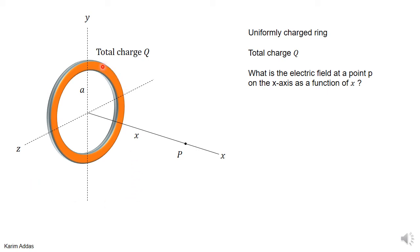You're given a ring of charge that exists in the y-z plane, so the x-axis is perpendicular to this ring. The ring is centered on the origin, it has a radius of a, and the total charge of the ring is q. The ring has a very thin thickness in all dimensions — it's basically a line. The question asks: what is the electric field at some point p located a distance x from the origin? We want the electric field as a function of x.